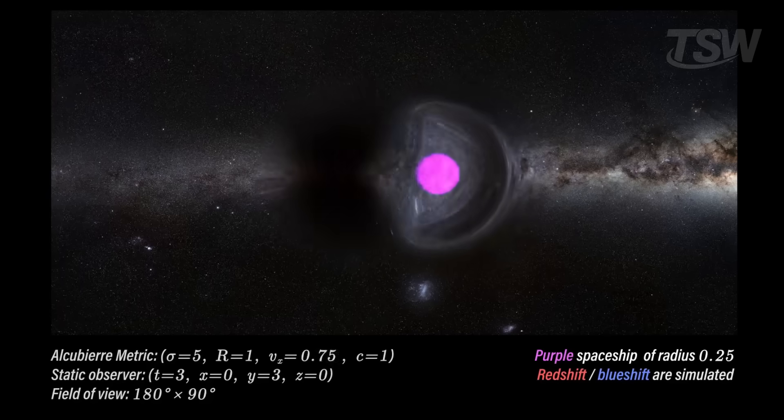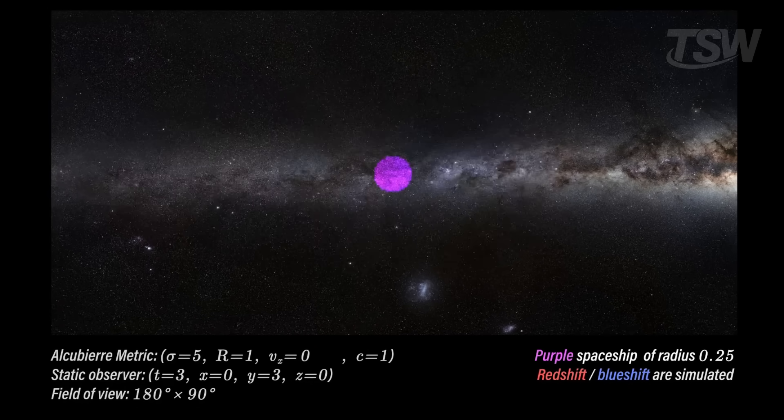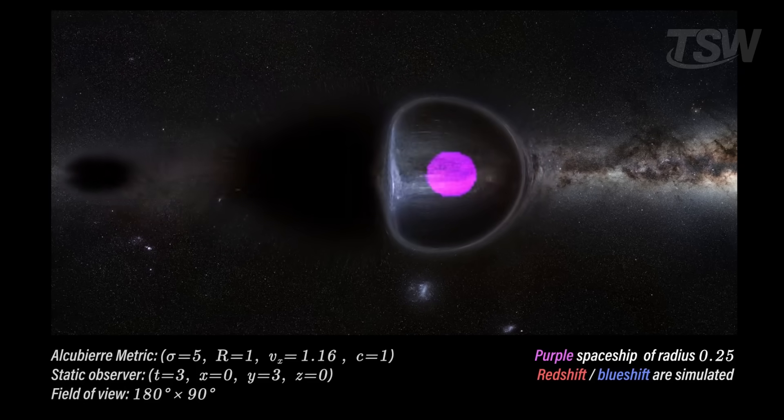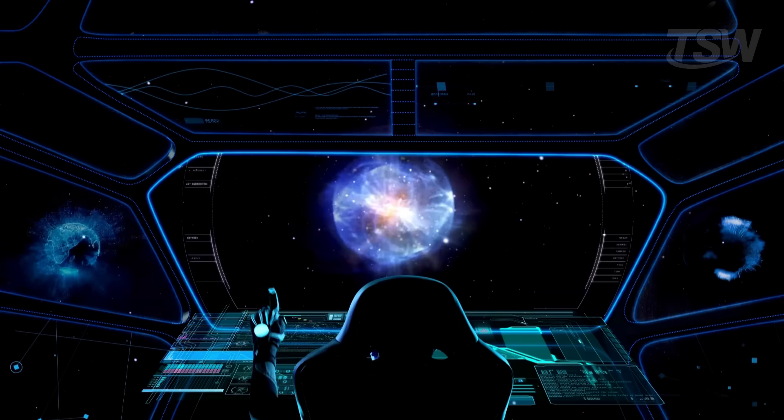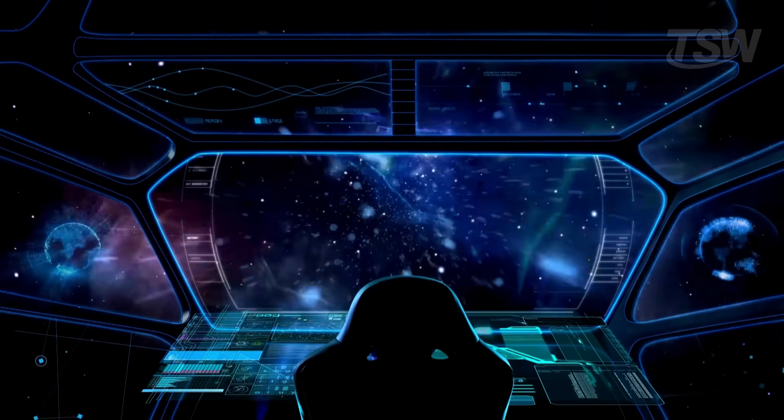According to his model, it wouldn't be the ship itself moving faster than light, but rather the space around it. The idea is to create a distortion bubble. Space in front compresses, the space behind expands, and the ship surfs on that wave. Since the motion occurs within spacetime itself, it wouldn't technically break the laws of physics, in theory.